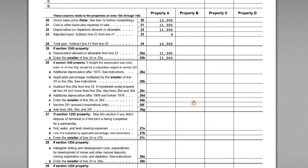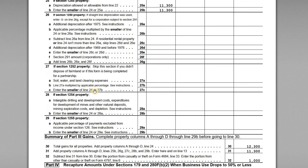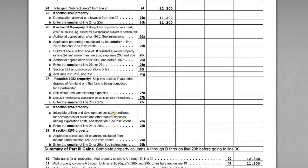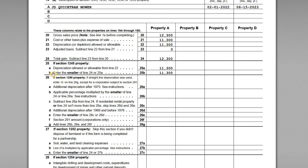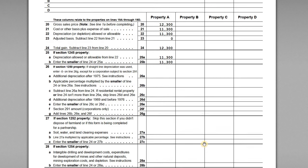We are working with Section 1245 property — Section 1250 is real estate, and there are other categories for farm equipment, IDC costs, and the like, but those don't apply here. So we're focusing only on Section 1245 property. Line 25a asks us to enter the amount of depreciation allowed or allowable from line 22, which gives us the $11,300 figure. Then on line 25b we enter the smaller of line 24 or line 25a — that's also $11,300. They're determining how much is depreciation recapture: since our gain exceeds the depreciation, the recapture is limited to the depreciation taken, and the excess becomes the 1231 gain.